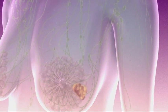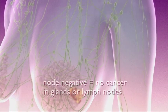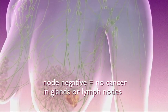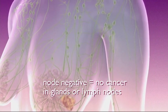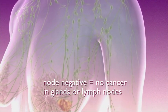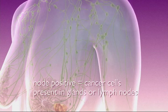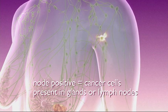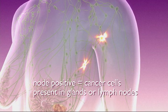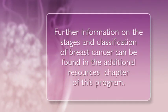The nodal status of your cancer simply indicates if the cancer is present in the glands or lymph nodes. Node negative means there are no cancer cells present in your glands or lymph nodes. Node positive means there are cancer cells present in your glands or lymph nodes.